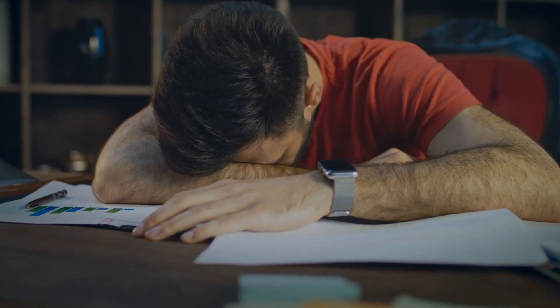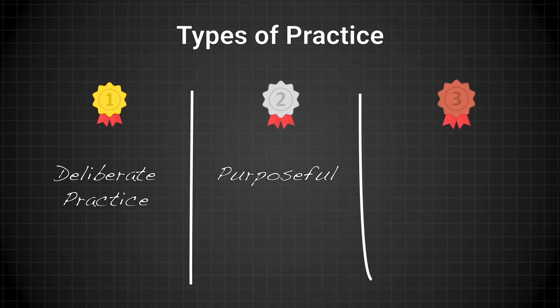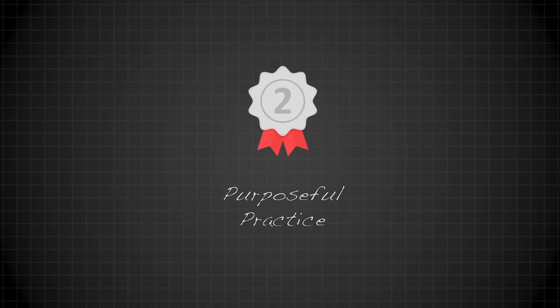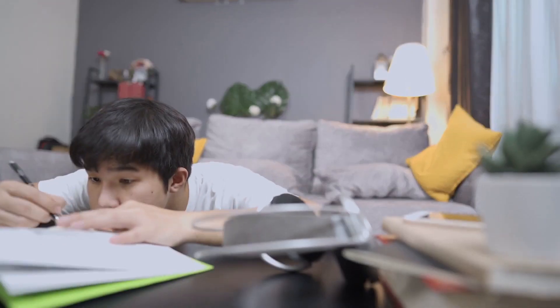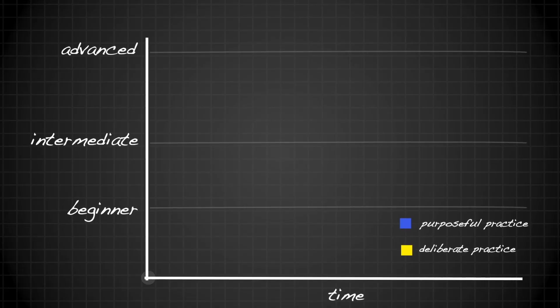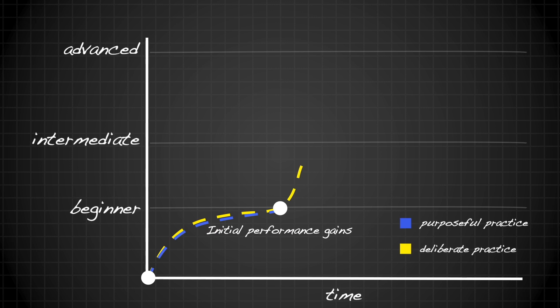Deliberate practice is intense and the process can often be unenjoyable. However, over time, once performance gains begin to rise, so does motivation. Below deliberate practice is purposeful practice. This is the type of practice where there is a clear intention to improve performance, but the student does not frequently have access to an expert teacher to provide personalized feedback. Purposeful practice can yield performance gains, but not with the same effect as deliberate practice.